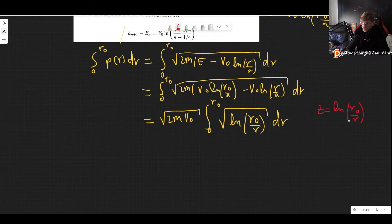So finding R from here we have to exponentiate so we get e to the Z is equal to R0 over R. So R is equal to R0 times e to the minus Z. So dR is equal to minus R0 e to the minus Z dz. Now we have everything that we need. Let's plug it in.